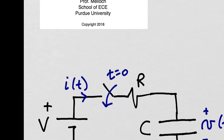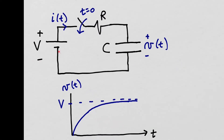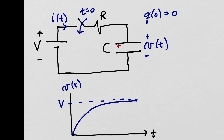Let's look at the following circuit. We have a DC power supply in series with a resistor, a capacitor, and a switch that we're going to close at T equals zero. Let's start with the capacitor uncharged, so Q at T equals zero is going to be zero. When we close this switch at T equals zero, a current is going to start to flow and that current is going to charge the capacitor.